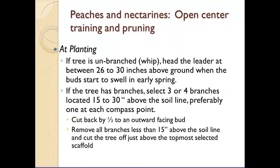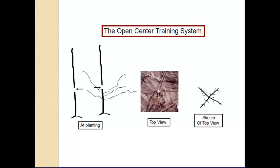For peaches and nectarines at planting: if the tree is unbranched, head the leader around 26 to 30 inches. Several buds will break, creating scaffold branches. At that point, select those three or four branches you want as your scaffolds. Pictures show the initial cut on the far left, the resulting branches that form below it, and then a top view drawing showing how you select three to four that you want as scaffold branches.